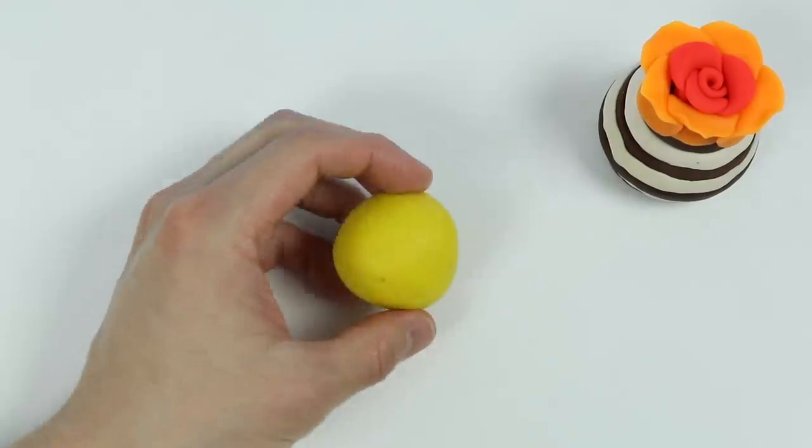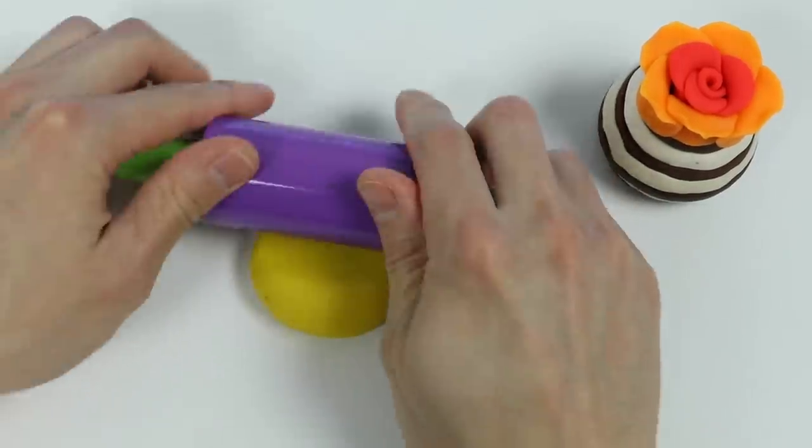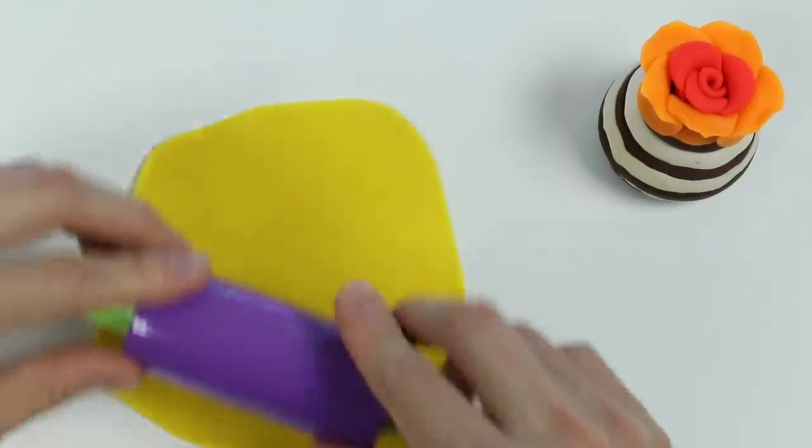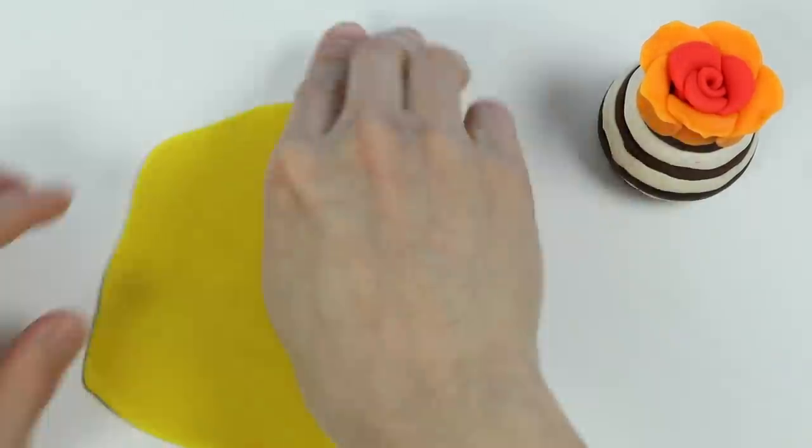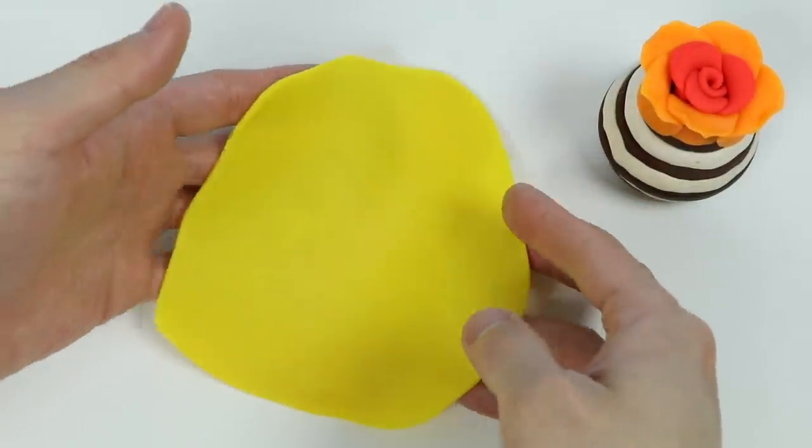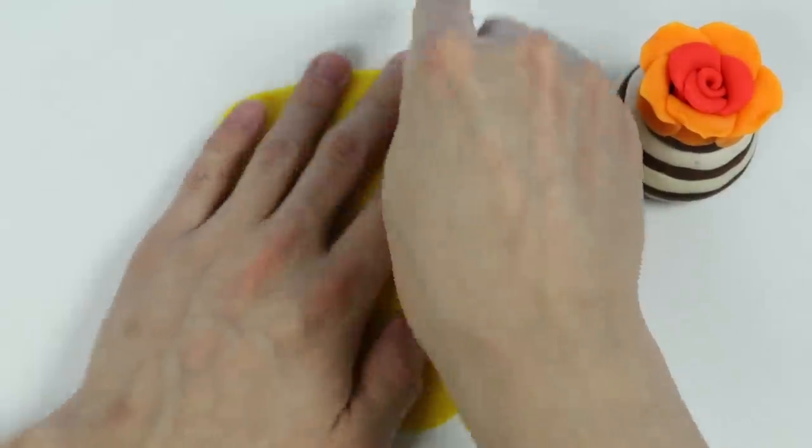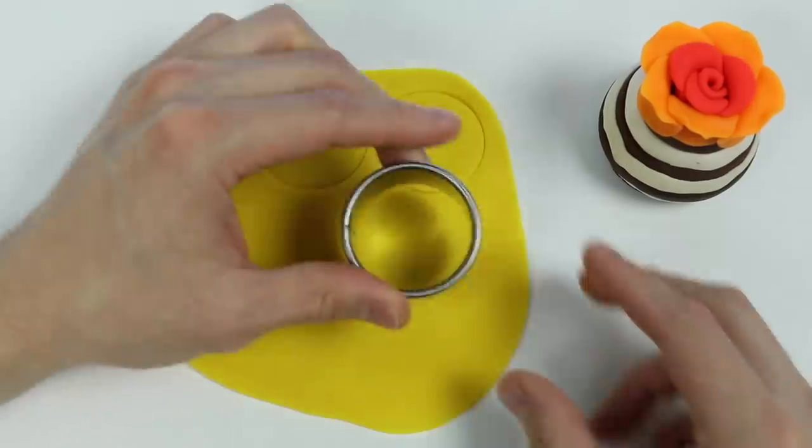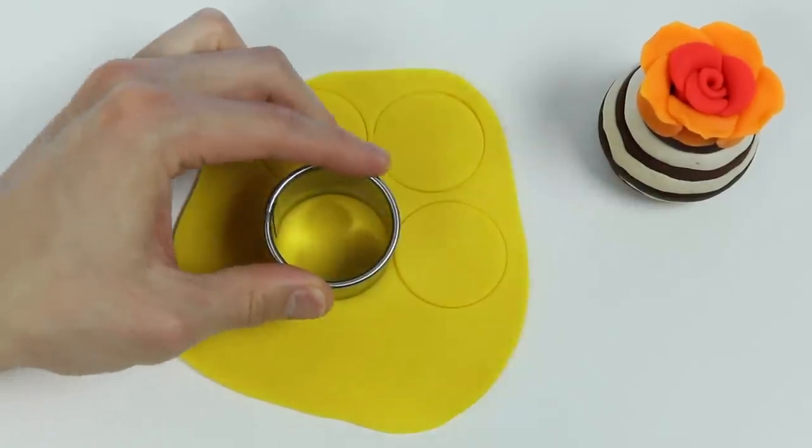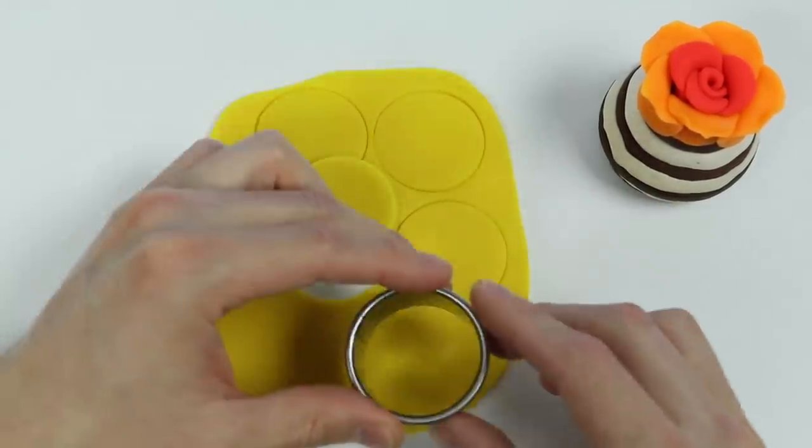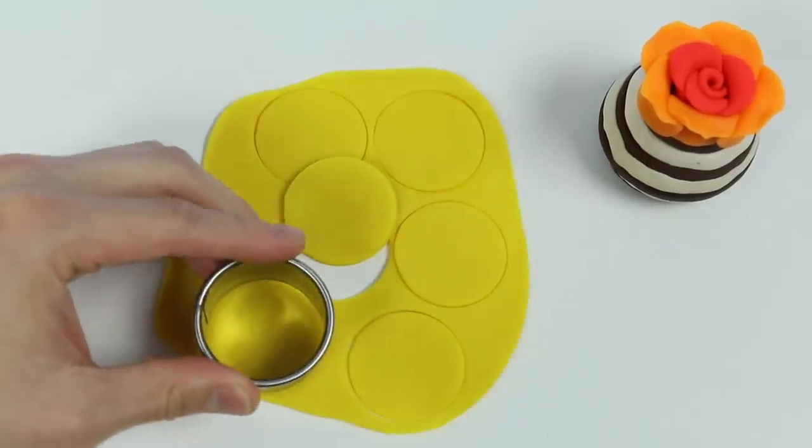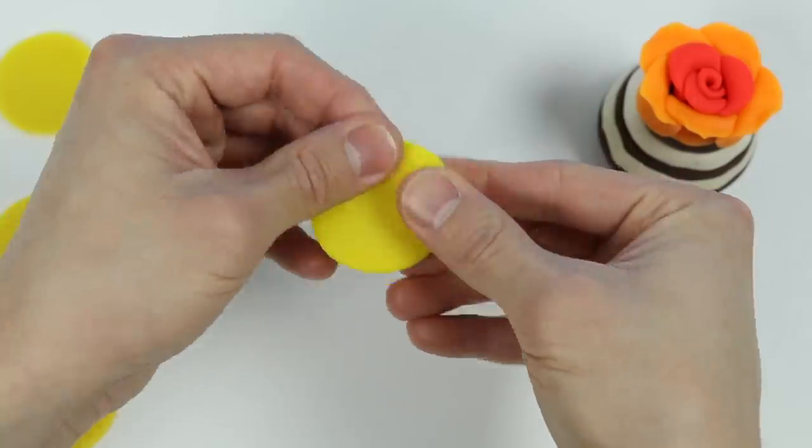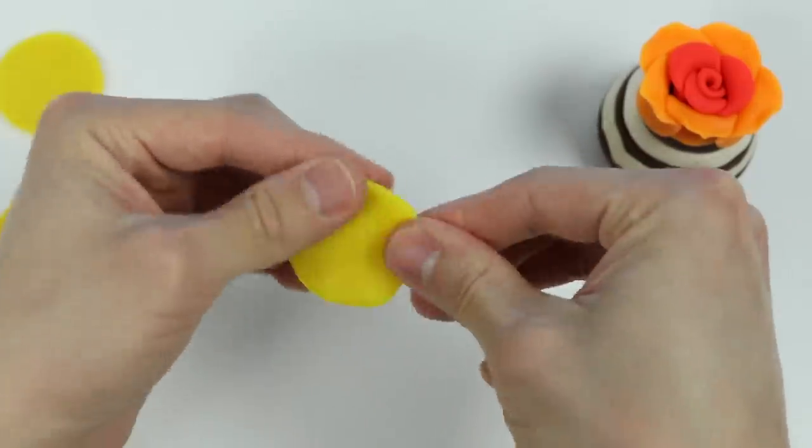Now let's do the same thing, but this time with yellow Play-Doh. Here are the yellow rose petals. Let's wrap these petals around the orange rose petals.